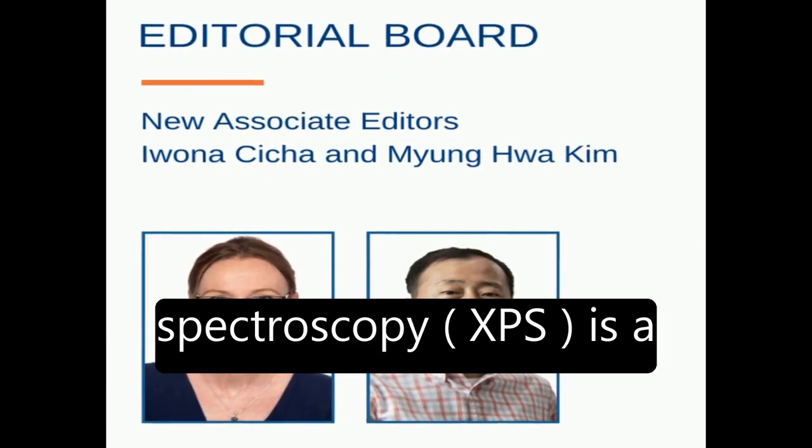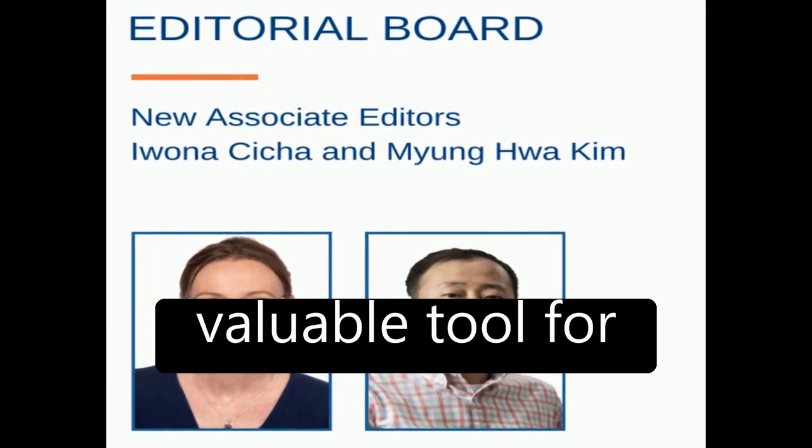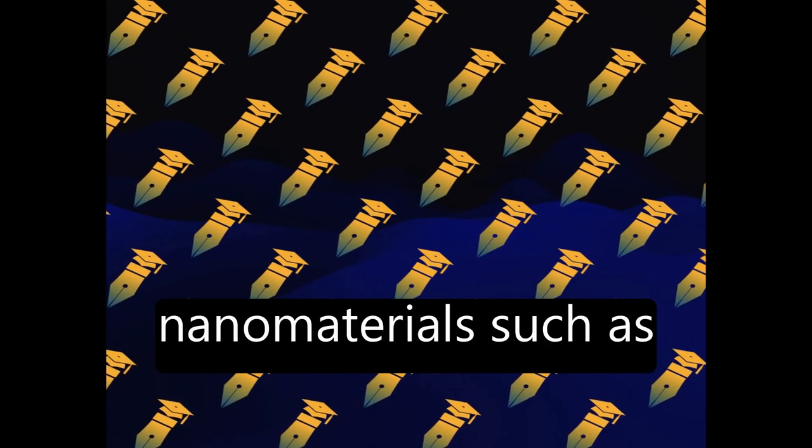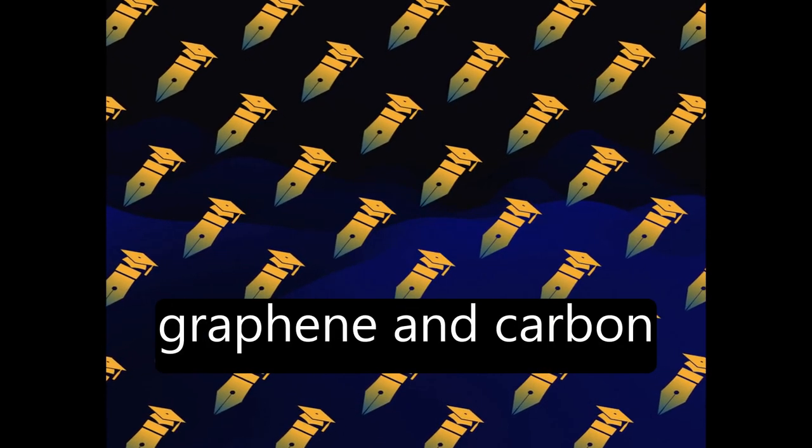X-ray photoelectron spectroscopy, XPS, is a valuable tool for studying the chemical modification of surfaces, particularly in carbon nanomaterials such as graphene and carbon nanotubes.